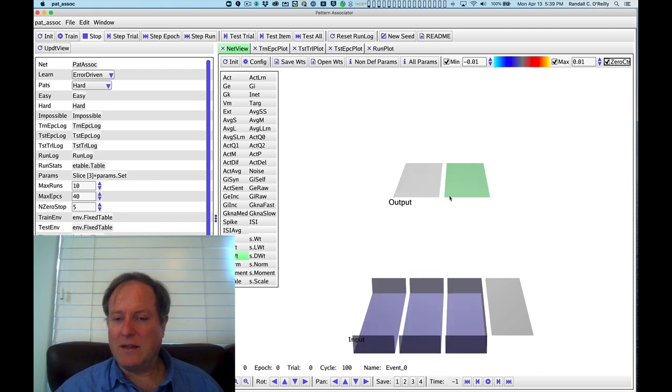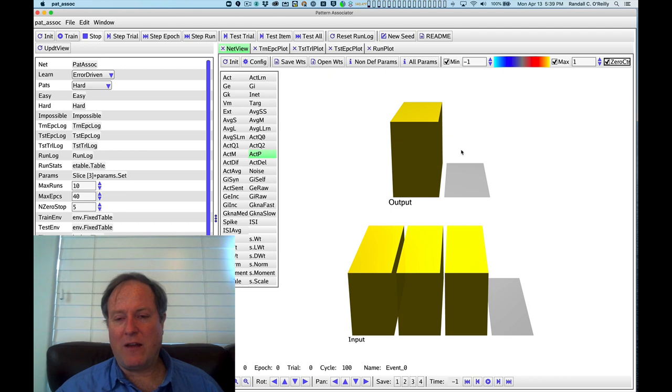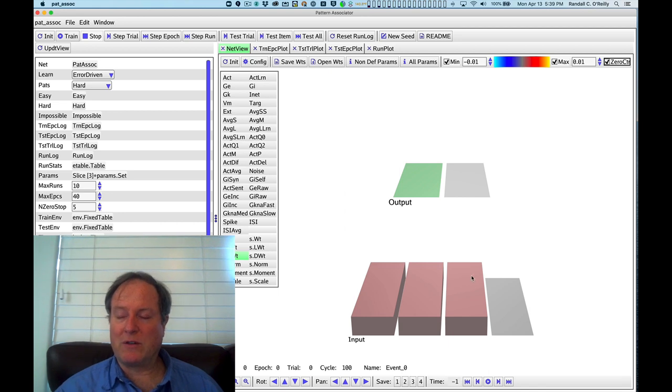In contrast, this one was active in the minus phase. We can see it was active in the minus phase but should not have been active. It was turned off in the plus phase - it wasn't part of the target pattern. Therefore, its synaptic weights are decreased. Very intuitive: you punish the errors and build up the appropriate correct response, always in proportion to the sending unit activity.